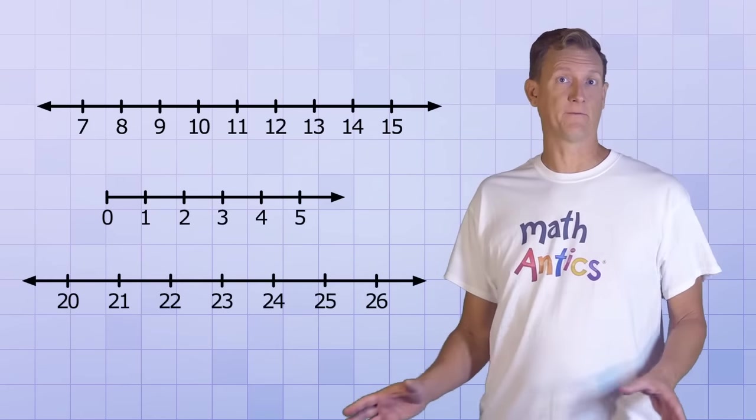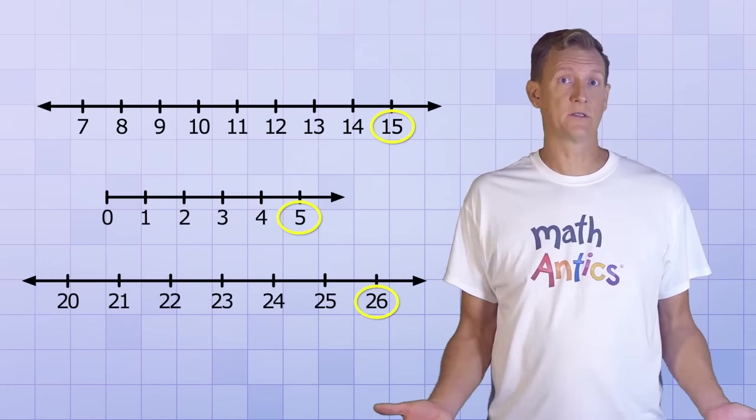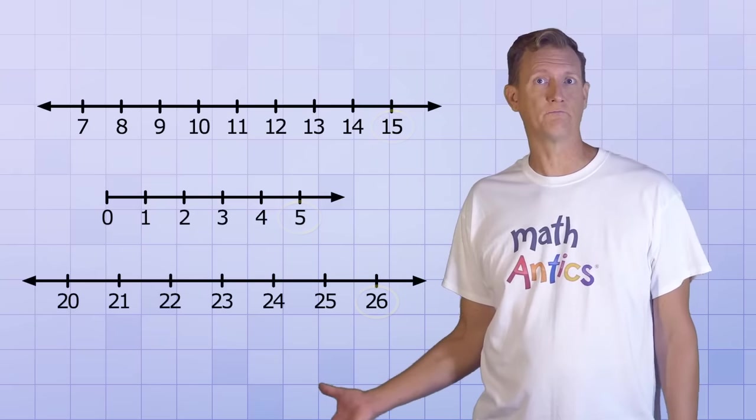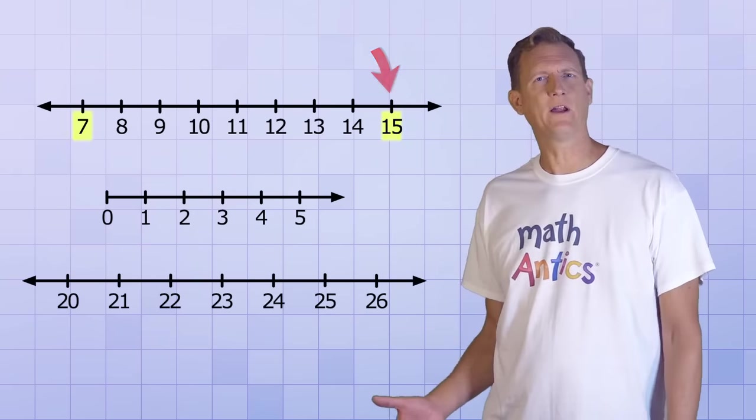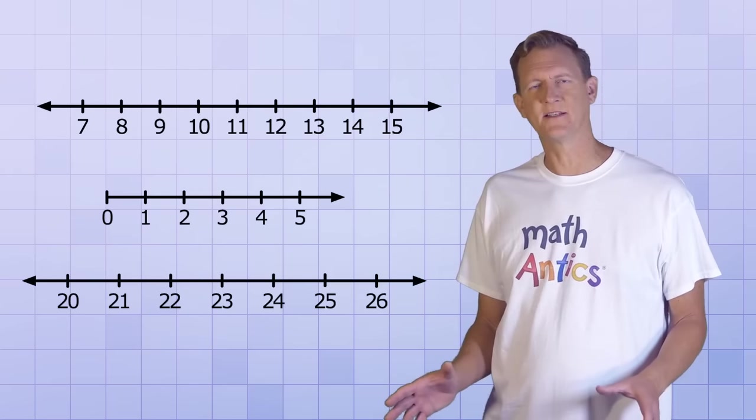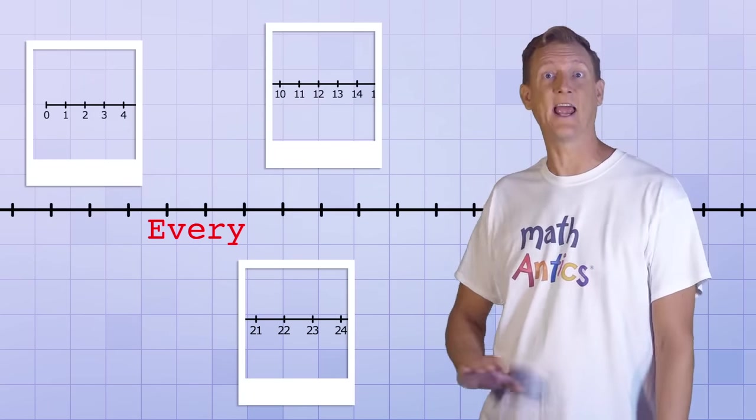You'll probably see many different versions of the number line as you learn math. Some may stop at different numbers and some might not even start at 0, like this one that starts at 7 and stops at 15. One way to think about these different number lines is that they're all snapshots of the ultimate, ideal number line that has every number on it.